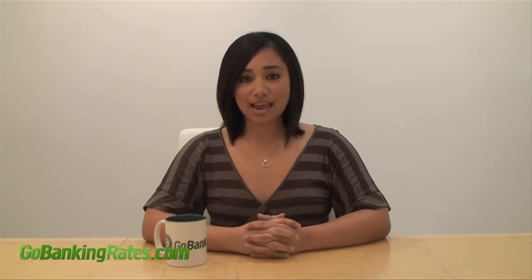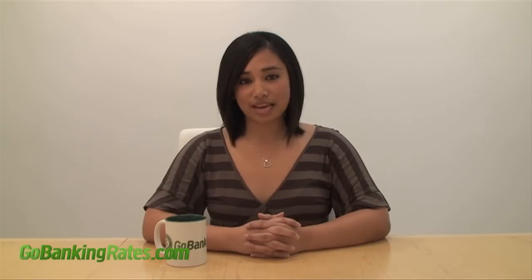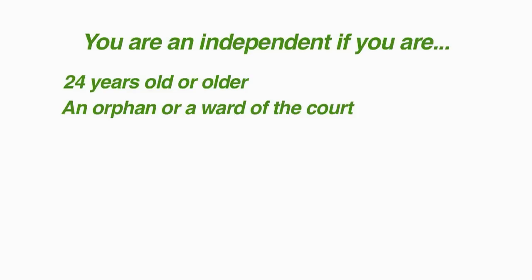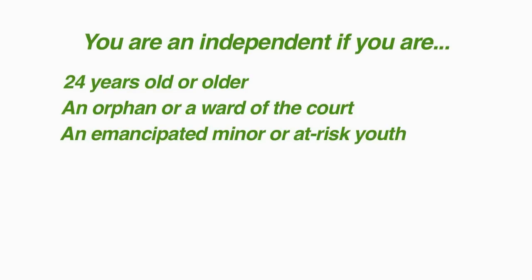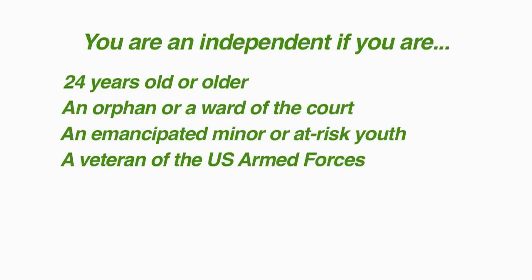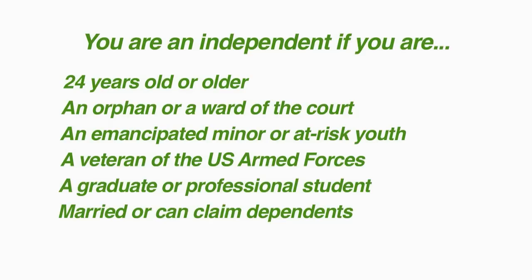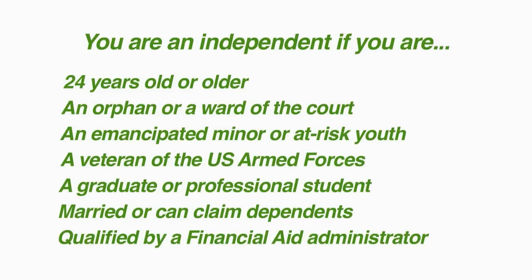The government requires that you list your assets and your parents' assets when filling out the FAFSA form. In order to claim yourself as an independent and avoid listing your parents' assets, you have to meet certain qualifications. You may file the FAFSA as an independent if you are 24 years old or older, an orphan, ward of the court, or were a ward of the court until 18 years old, if you are an emancipated minor, or an unaccompanied youth at risk for homelessness on or after July 1st of the current year, a veteran of the U.S. Armed Forces, a graduate or professional student, are married, or have legal dependents like children, or if you have unusual circumstances as deemed by a financial aid administrator. If you don't meet any of these qualifications, you still need to provide your parents' financial information for the FAFSA, even if you don't live with them or have filed your own taxes.